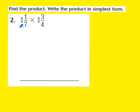I'm going to start with 1 and 1 seventh. I have to multiply my denominator, which is 7, times the whole number, which is 1. So that would be 7 times 1. Then I add the numerator, which is 1. So 7 times 1 is 7, and 7 plus 1 more gives us 8. My numerator becomes 8, and my denominator stays the same, so we write 8 over 7.